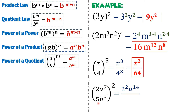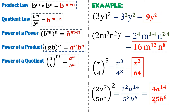For the denominator, 5b cubed raised to 2: 5 gets the exponent 2, and b cubed gets its exponent multiplied — 3 times 2 gives b raised to 6. Simplifying: 2 raised to 2 is 2 times 2, which is 4; a raised to 14 stays; 5 squared is 5 times 5, which is 25; and b raised to 6 stays. So the final answer is 4a raised to 14 over 25b raised to 6.